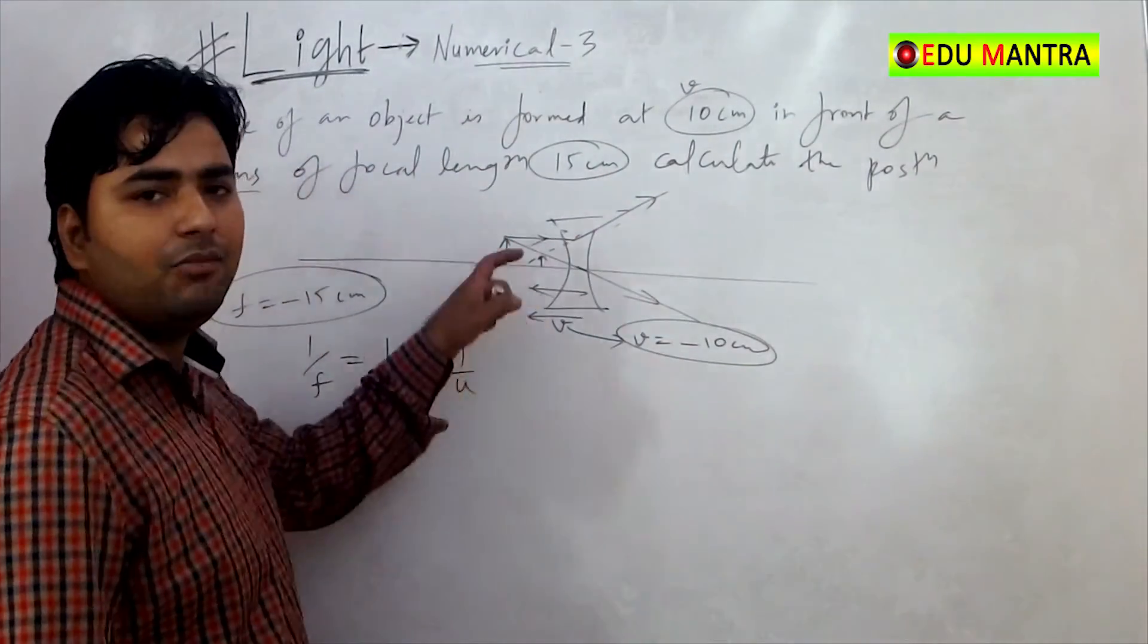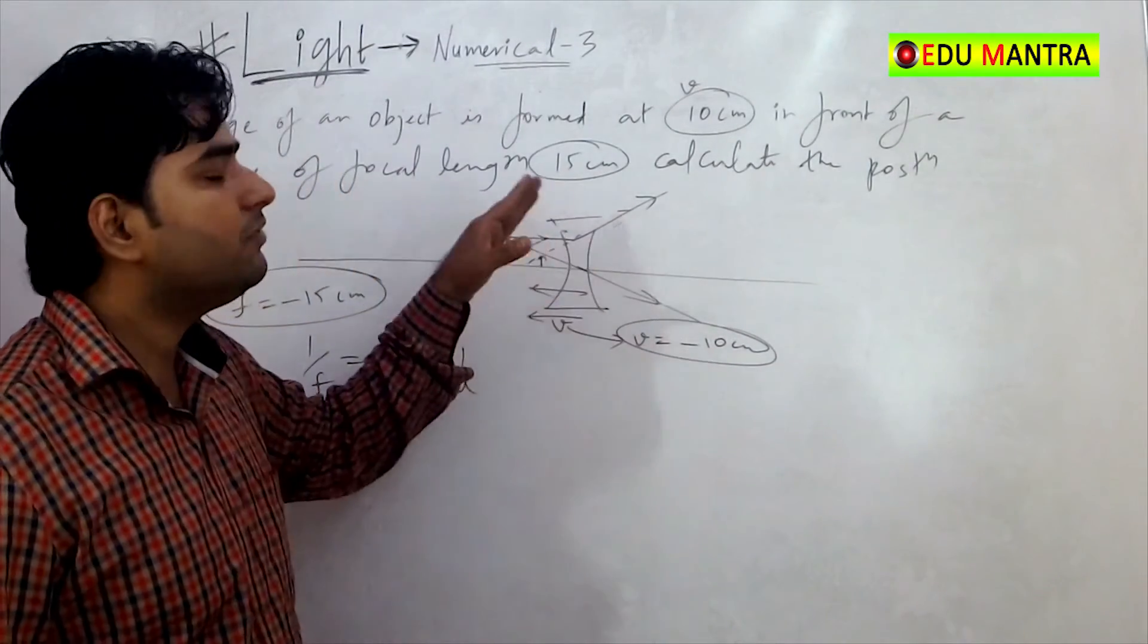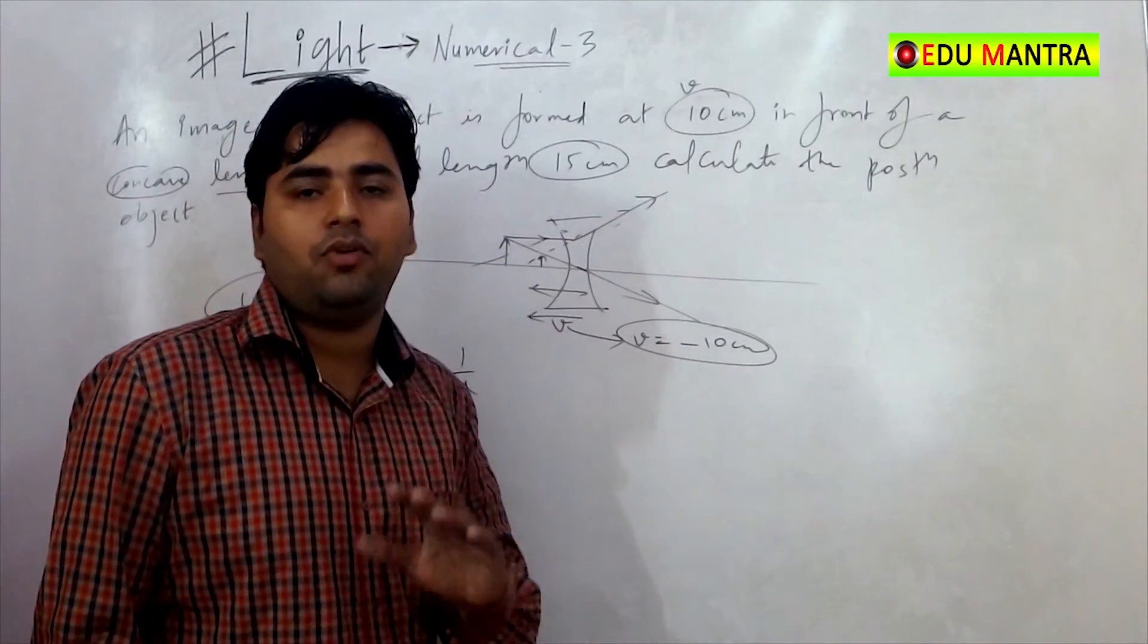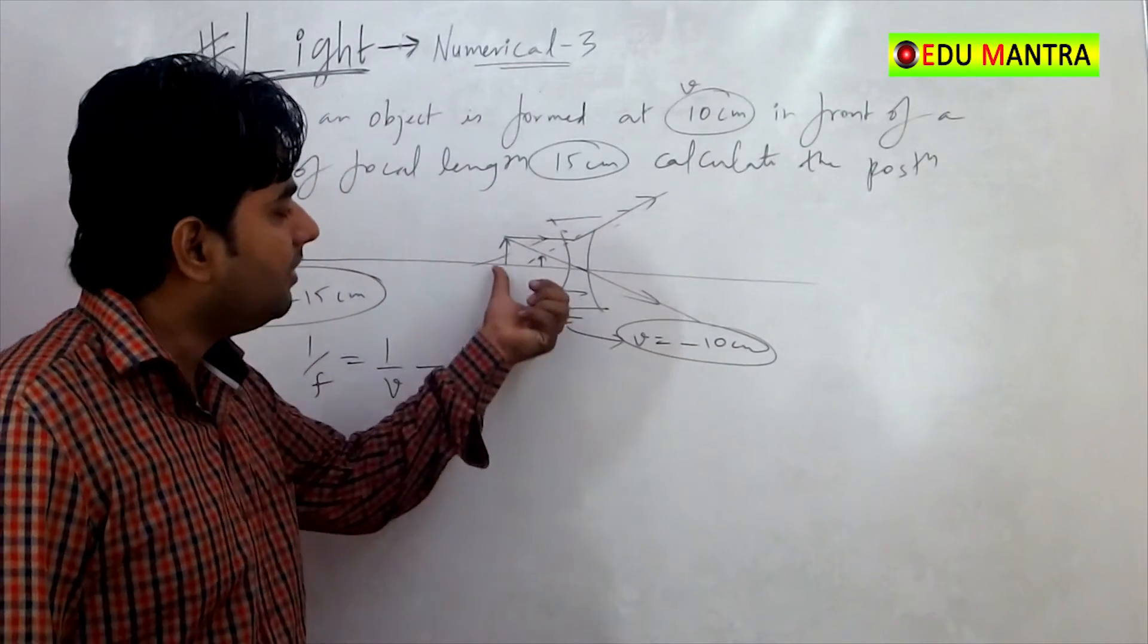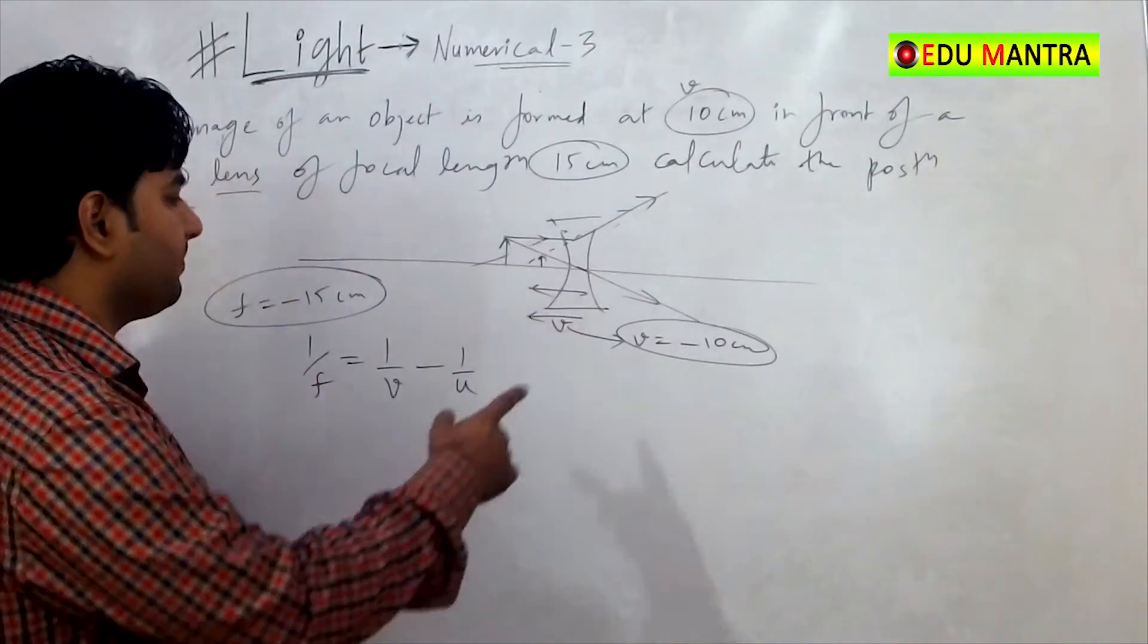That will be minus 10 cm. If you look at the details, this is the concave lens. We know that always the image is on the same side as that object and hence the image will also be negative. Image distance, so that would be minus 10 cm.